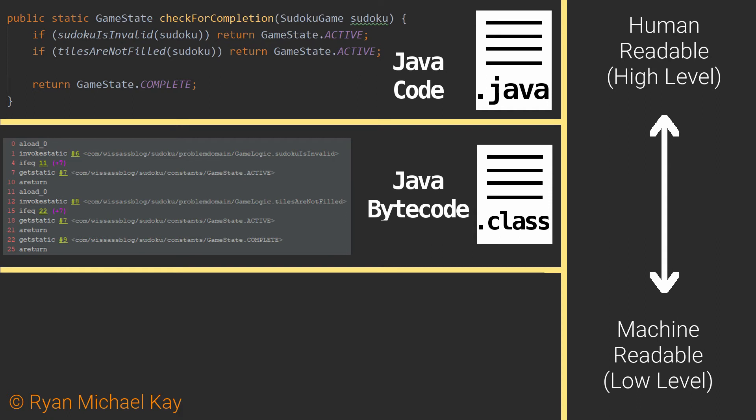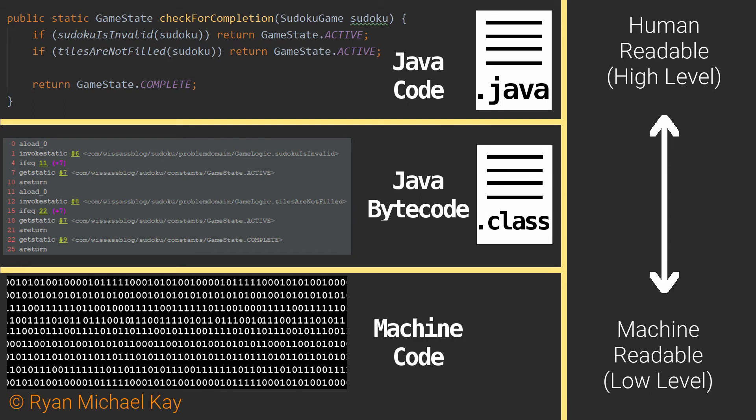Once the Java bytecode is created, the next step is that the bytecode will be given to a Java Virtual Machine, or JVM for short. There are many different JVMs which are written for different operating systems, such as Windows, Mac, or Linux, and I will discuss them further in the next lesson. The JVM will take our class files and translate them into something which the operating system itself can execute. Fortunately, the programs we typically use to write our applications will handle jobs like compilation for us, though it is helpful to know a bit about this process.